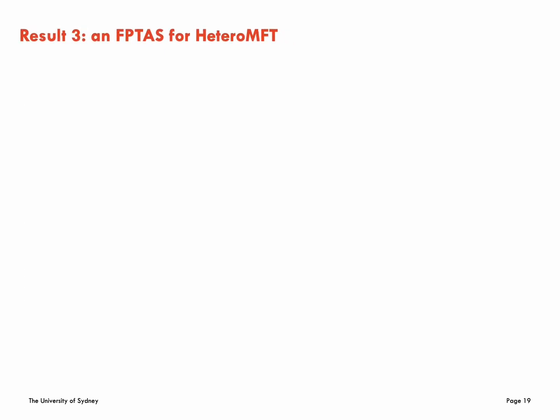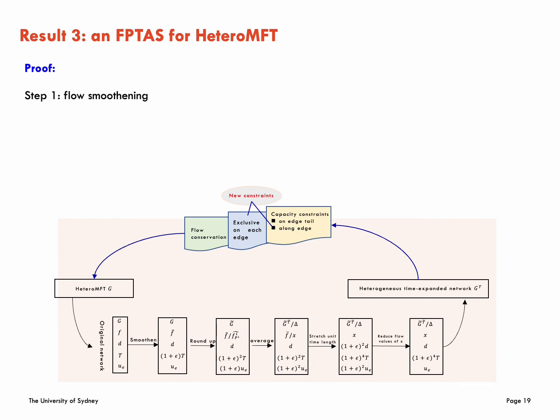Here are the proof steps. Step 1: From any heterogeneous multi-commodity flow over time f in network G with demand d and time horizon T, we can get a smoothened heterogeneous multi-commodity flow over time f tilde with the same demand d within time horizon 1 plus epsilon T and still obeys the capacity constraints in G. After smoothing the flow, the next step is to round up the transit time of each commodity to the nearest multiple of capital delta such that the dynamic network can be feasibly converted to a capital delta condensed time-expanded network.